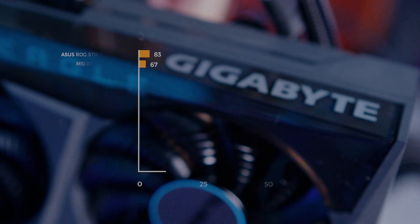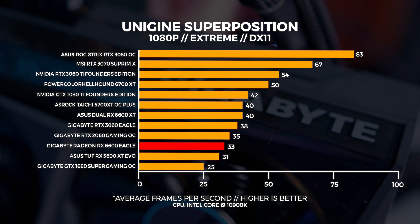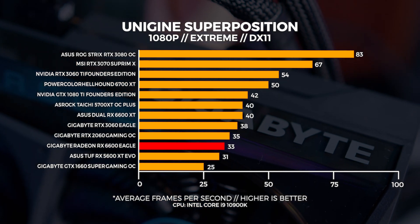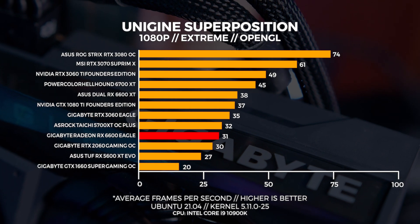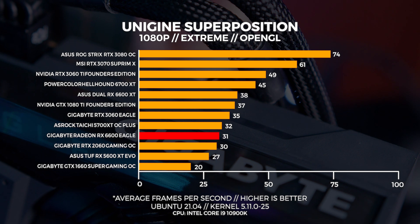Let's move over to Unigine Superposition. For these tests we performed three tests in total: a 4K optimized preset, 1080p extreme, and a custom 1440p preset with depth of field and motion blur turned off. We're just comparing the out of the box experience with this benchmark. At the 1080p extreme benchmark in Windows — which is highly GPU bound — we're seeing the 6600 coming in behind the 2060. In Linux at 1080p extreme, the 6600 is beating out the 2060 by a single frame.